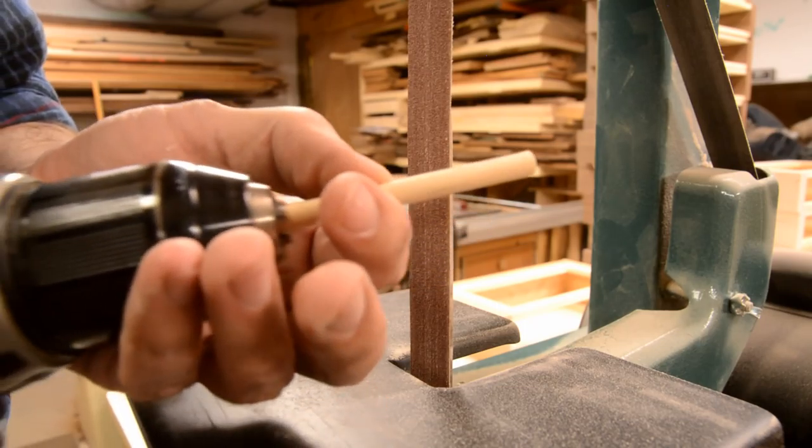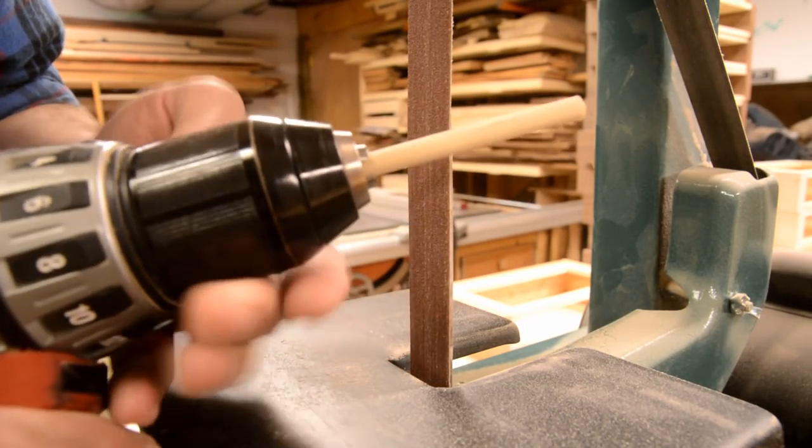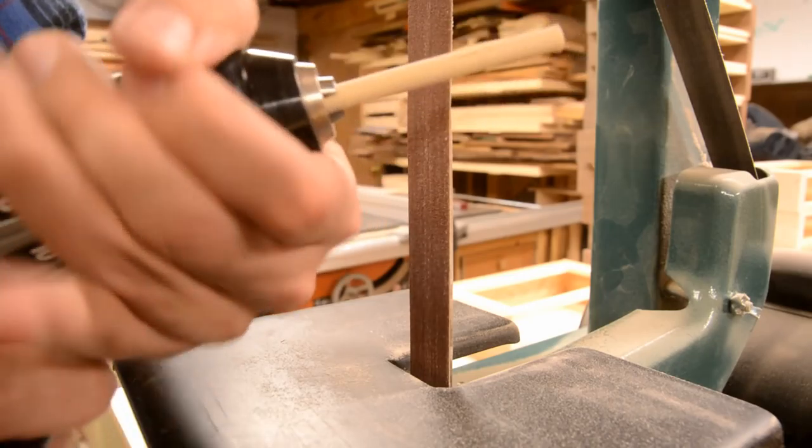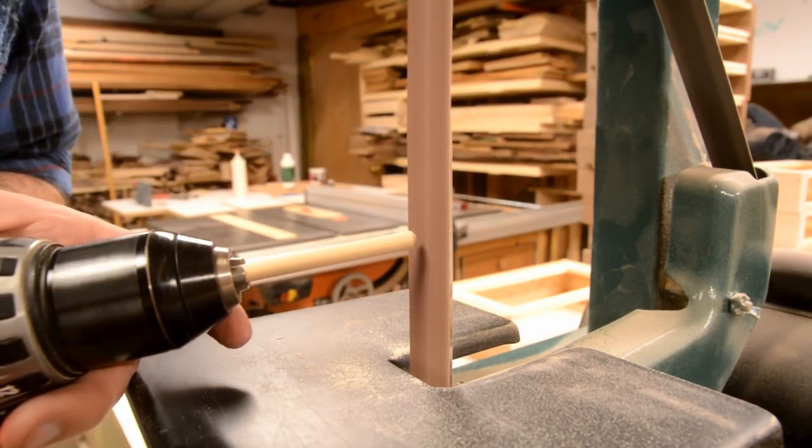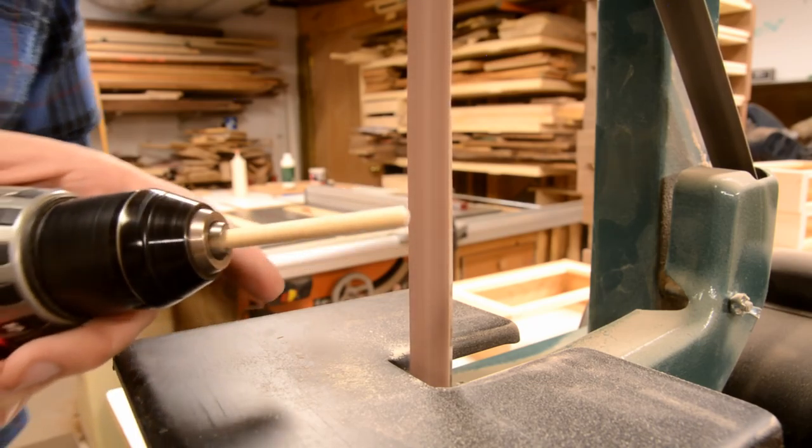To cap it off at the top where the water would have been splashing up, I'm just rounding over the end of a quarter inch dowel by chucking it into my drill and then running it against the belt sander.